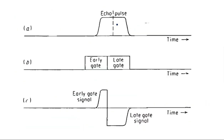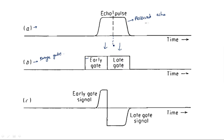Looking at the diagram: this is the received echo pulse, and it is passing through a range gate. The range gate has two parts — early gate and late gate. The center of the received signal does not exactly coincide with the center between the early gate and late gate. This is the amount of signal passing through the early gate and this is the amount passing through the late gate, because the center is located off-position.